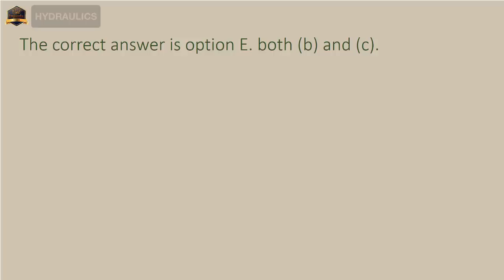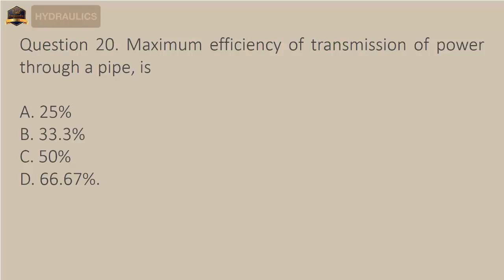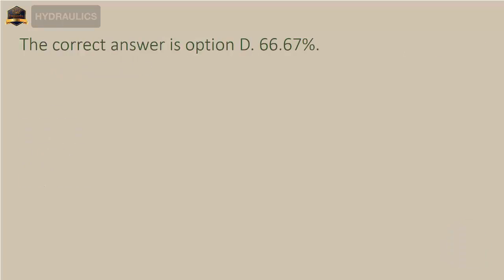Question 20: Maximum efficiency of transmission of power through a pipe is — A) 25%, B) 33.3%, C) 50%, D) 66.67%. The correct answer is option D: 66.67%.